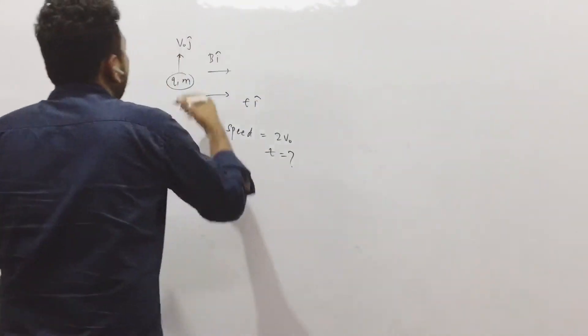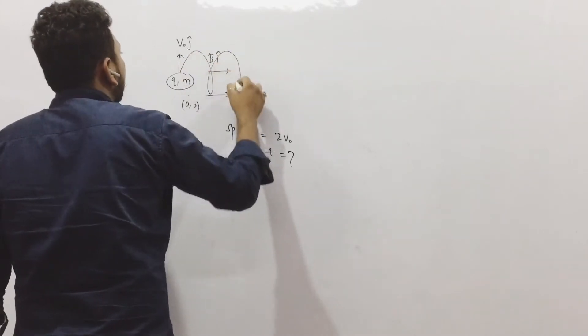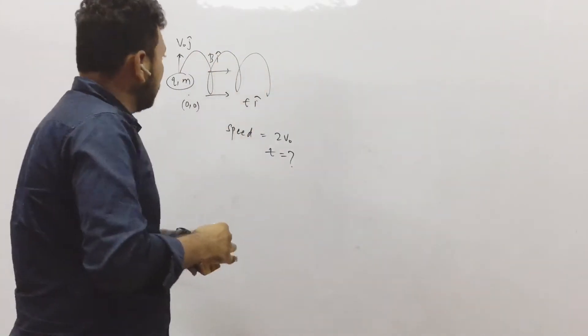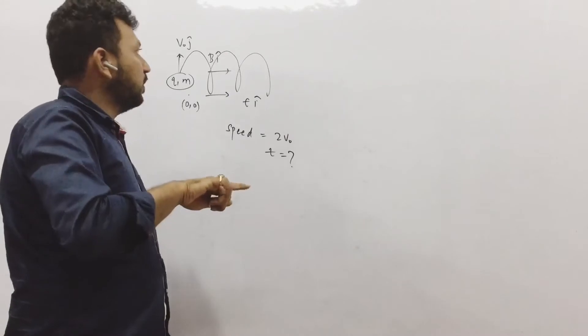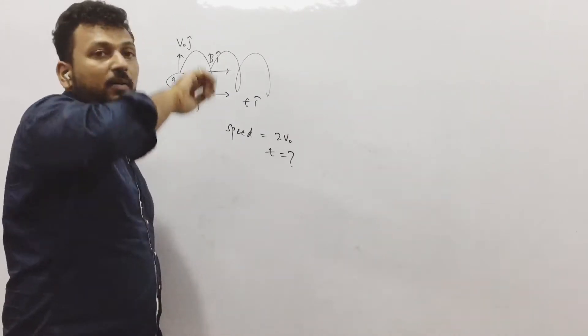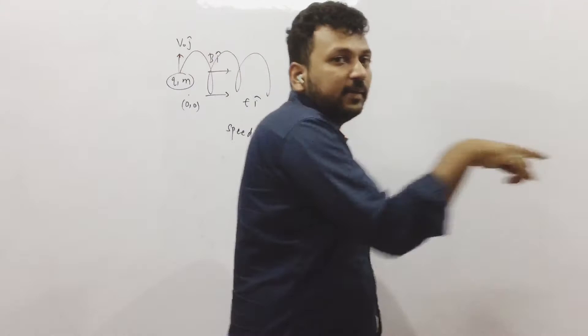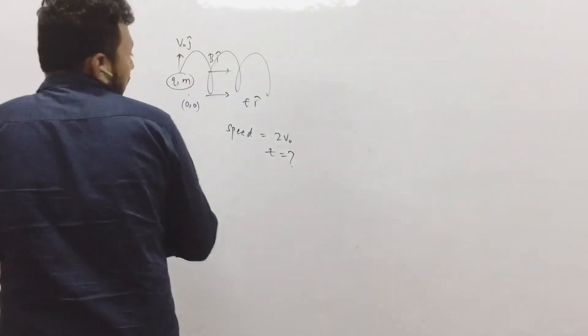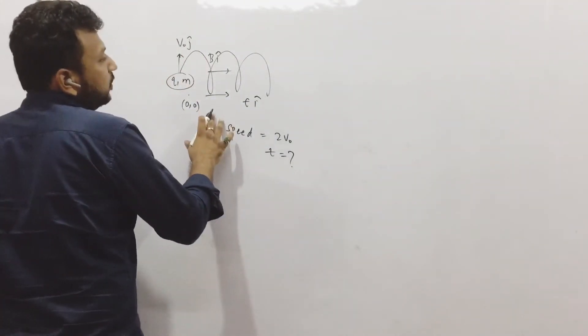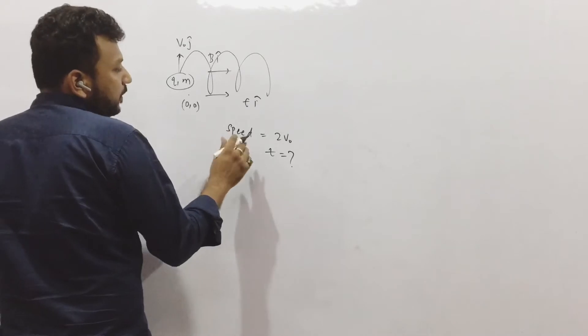So there are two ways we can solve it. v cross B in this direction, so force is in this direction, it will move like this and accelerate in the x direction. So there are two ways we can solve it.